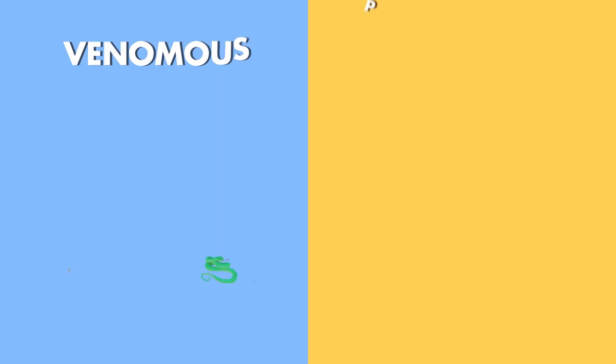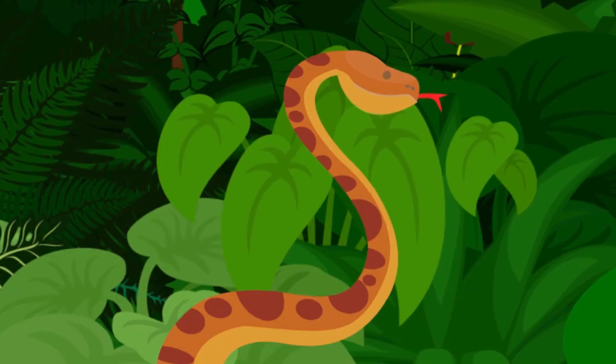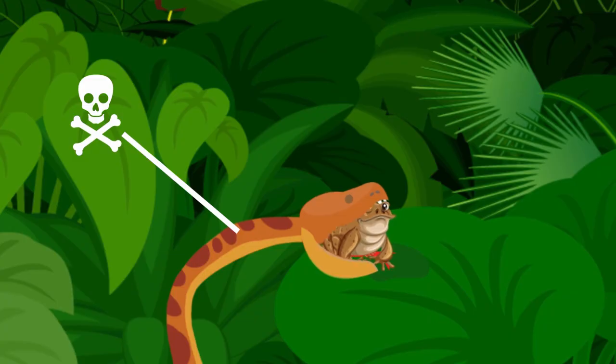But now that we know the difference between venomous and poisonous animals, here are just a few examples of these creepy crawly deadly creatures. Take the Asian tiger snake. It's venomous from its bite, but also poisonous from the toxins it stores in its skin that comes from the toads that it eats, making it one of the only species of snakes that is doubly lethal.